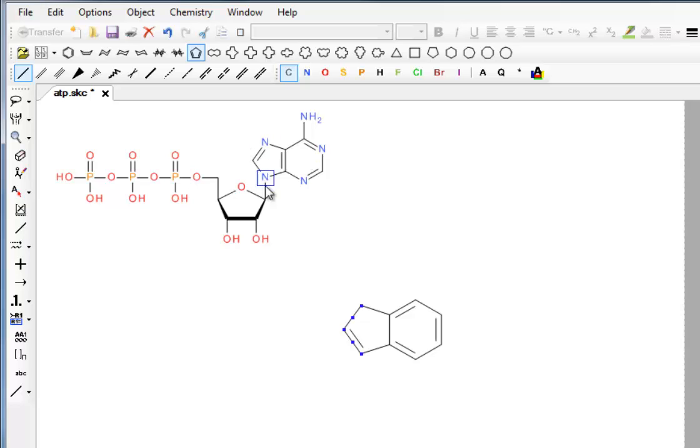One thing we want to do is make sure we draw these double bonds in the right place. You do see them drawn in different places because this is a conjugated system, but for now we're just going to make sure they're all in the same orientation as this for consistency. We're in the wrong place at the moment, so click on the single bond tool, select that bond.